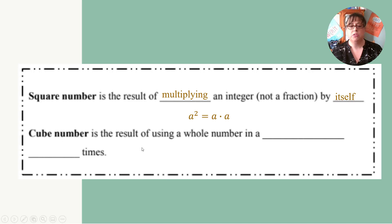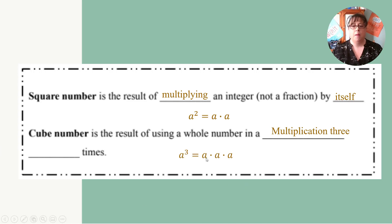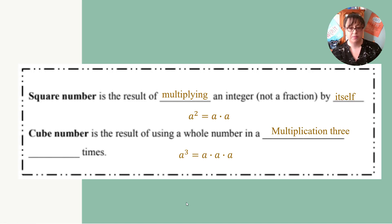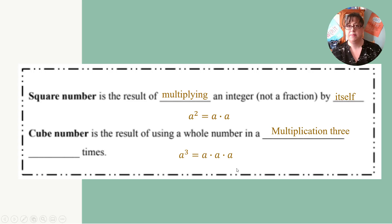Then we have cube numbers. Cube numbers is the result of using a whole number in multiplication three times. We write it as a to the third — so a times a times a. For example, two times two times two is eight. Three times three times three: three times three is nine, times three again is 27. Four times four is 16, times four again is 64. So it's just a way for us to work with square roots and cube roots.